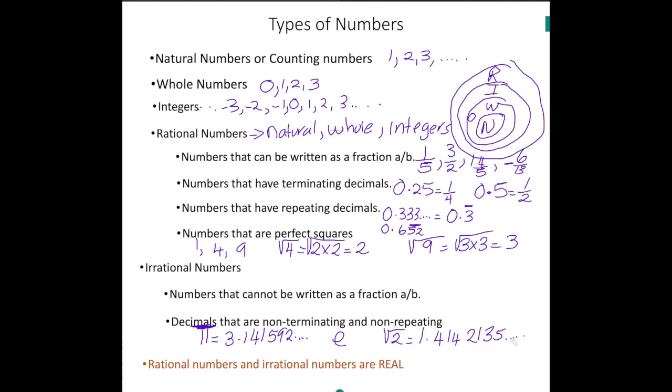So this decimal is non-terminating, and it does not have a repeating pattern. When you see these dots at the end, you do not know what number is going to come next, so we know right away it has a non-repeating pattern.